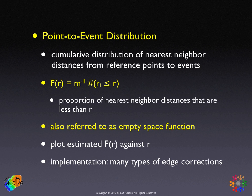We put a grid over our point pattern, and for each of our reference points, we find the closest event, take the distribution of all these distances, and then construct a cumulative distribution, just like for the G function.